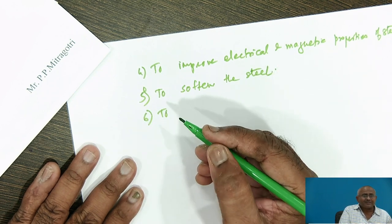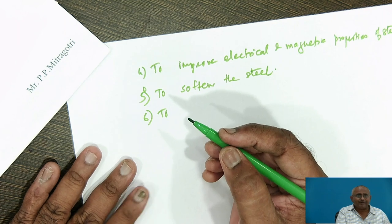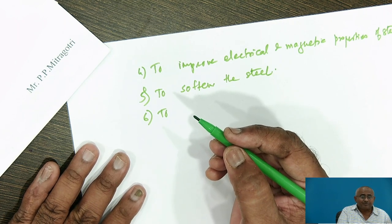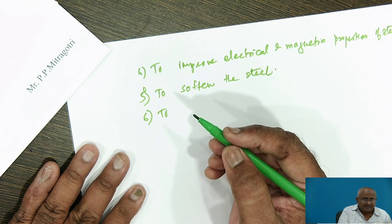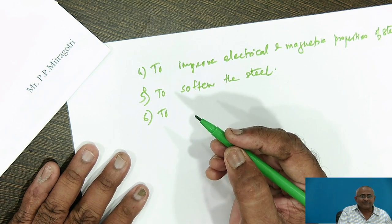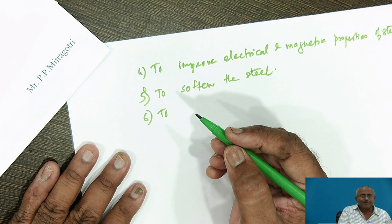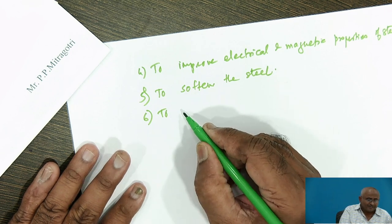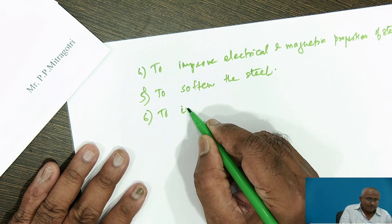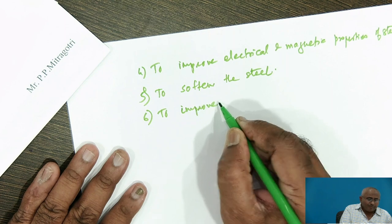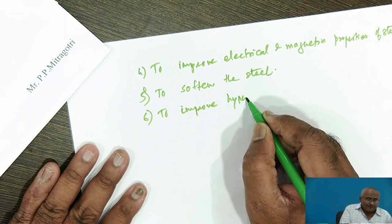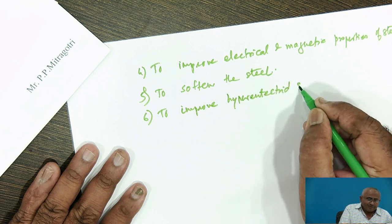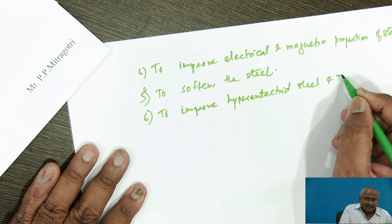In many cases, especially in hyper-eutectoid steels and tool steels, we find a cementite or carbide network surrounding the grains of pearlite, due to which the structure becomes very hard and un-machinable. So to improve the machinability of such hyper-eutectoid steels and tool steels, we have to carry out annealing.